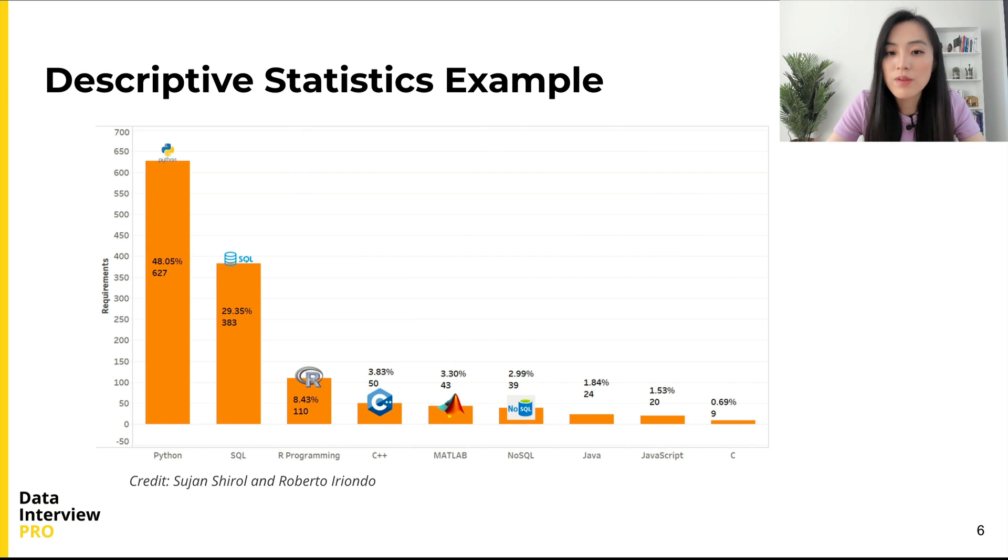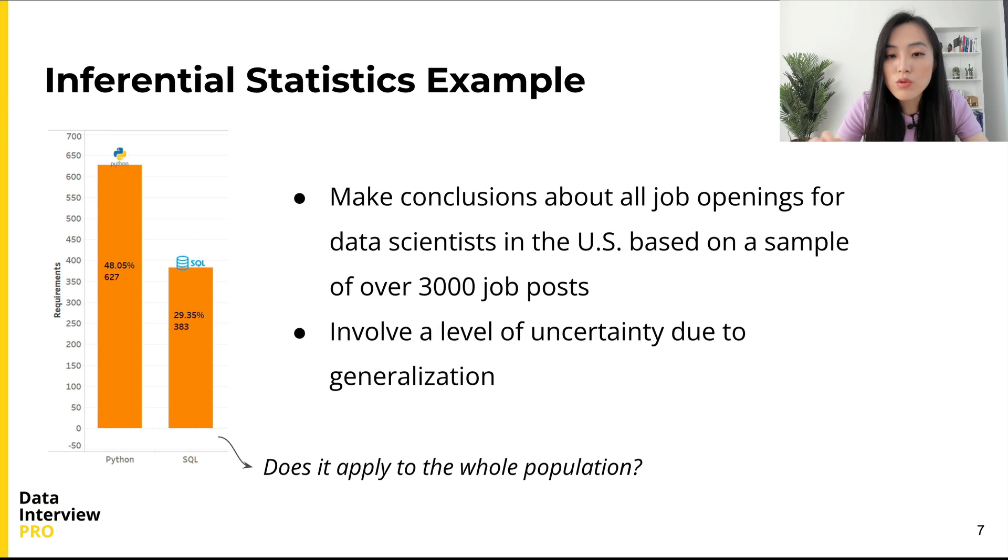Now, let's assume that from this sample, you observe that the top two programming languages for data scientists is Python and SQL. And you want to know if this finding also applies to the whole population of data scientist jobs and not just from those 3,000 job posts. In other words, you want to make conclusions about all job openings for data scientists in the US based on a sample of over 3,000 job posts.